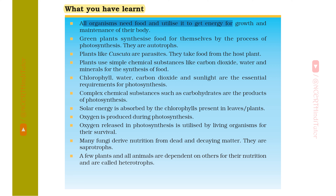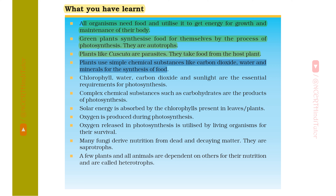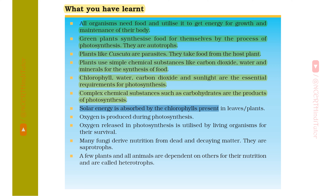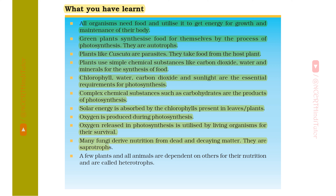All organisms need food and utilize it to get energy for growth and maintenance of their body. Green plants synthesize food for themselves by the process of photosynthesis — they are autotrophs. Plants like Cuscuta are parasites; they take food from the host plant. Plants use simple chemical substances like carbon dioxide, water and minerals for the synthesis of food. Chlorophyll, water, carbon dioxide and sunlight are the essential requirements for photosynthesis. Complex chemical substances such as carbohydrates are the products of photosynthesis. Solar energy is absorbed by chlorophyll present in leaves. Oxygen is produced during photosynthesis and utilized by living organisms for their survival. Many fungi derive nutrition from dead and decaying matter — they are saprotrophs. A few plants and all animals are dependent on others for their nutrition and are called heterotrophs.